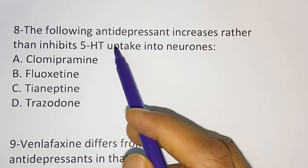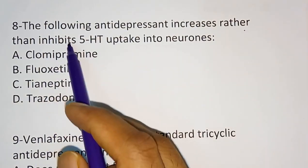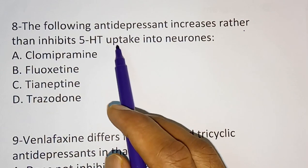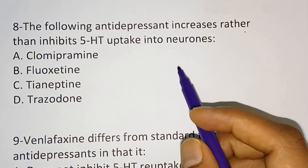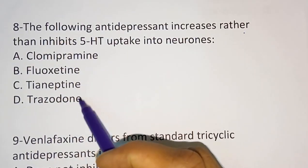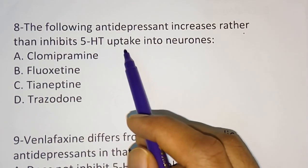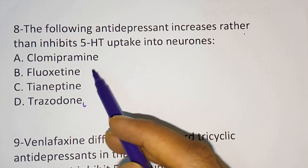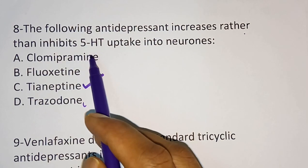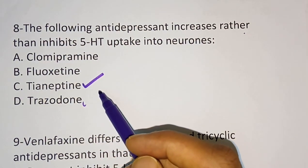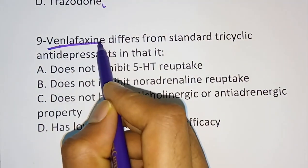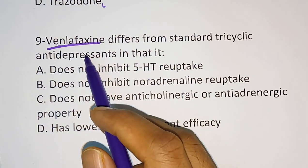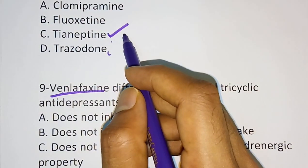The eighth question: the following antidepressant increases, rather than inhibits, 5-HT uptake into neurons. Normally antidepressants inhibit 5-HT uptake, but which of the following increases it? Options are Clomipramine, Fluoxetine, Tianeptine, Trazodone. The correct answer is Tianeptine — Tianeptine will increase 5-HT uptake. Tianeptine is also an atypical antidepressant.